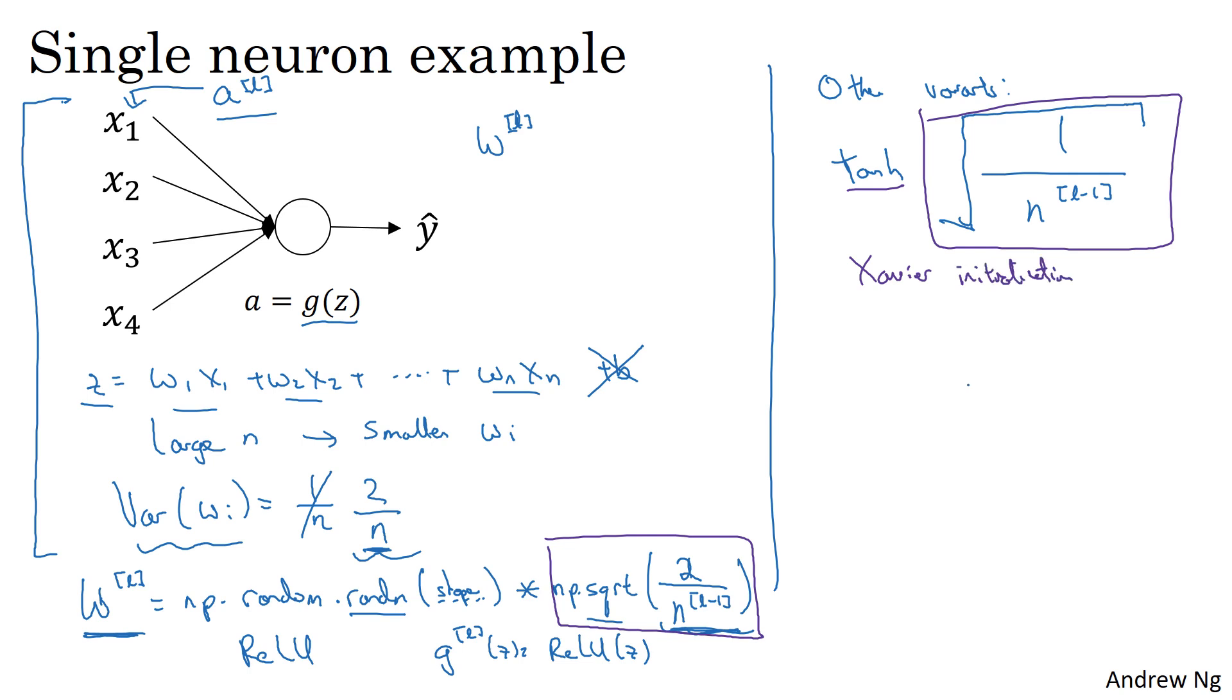And another version worked out by Yoshua Bengio and his colleagues, you might see in some papers, is to use this formula, which has some other theoretical justification.